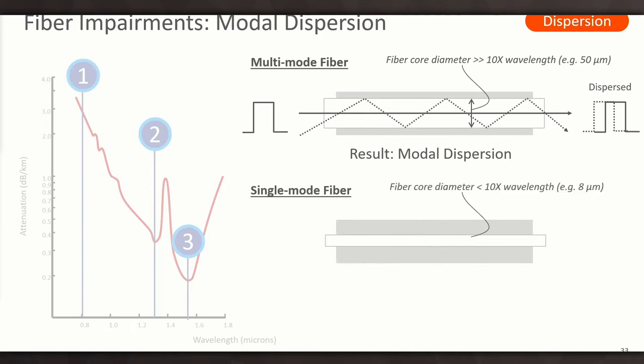How do you solve modal dispersion? You use single-mode fiber. And single-mode fiber is where the fiber core diameter is very narrow. It's less than 10 times the wavelength of the light that we're transmitting. With single-mode fiber, there's really only room for one pathway through the fiber, a single mode. And the end result is there's almost no modal dispersion. So that's why we don't tend to talk about modal dispersion much these days, because we always use single-mode fiber.